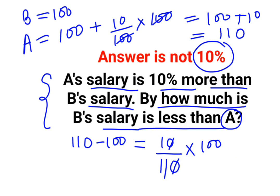So what happens is this gets cancelled. So we have 100 upon 11 which becomes 9, 1 upon 11%.